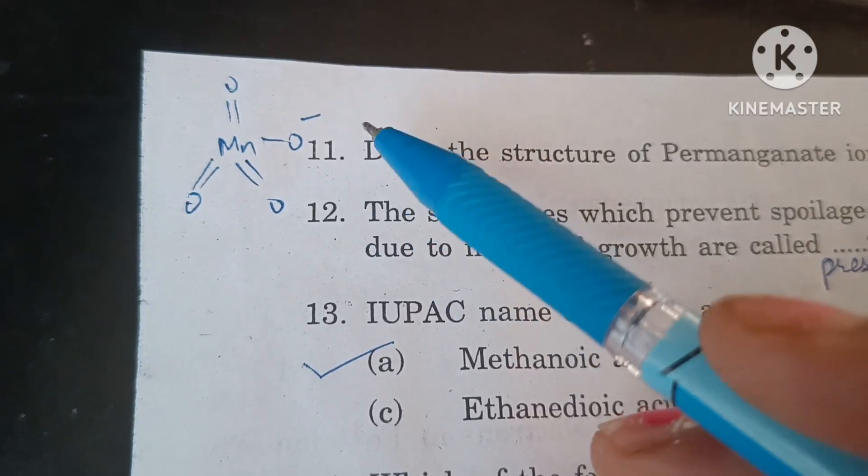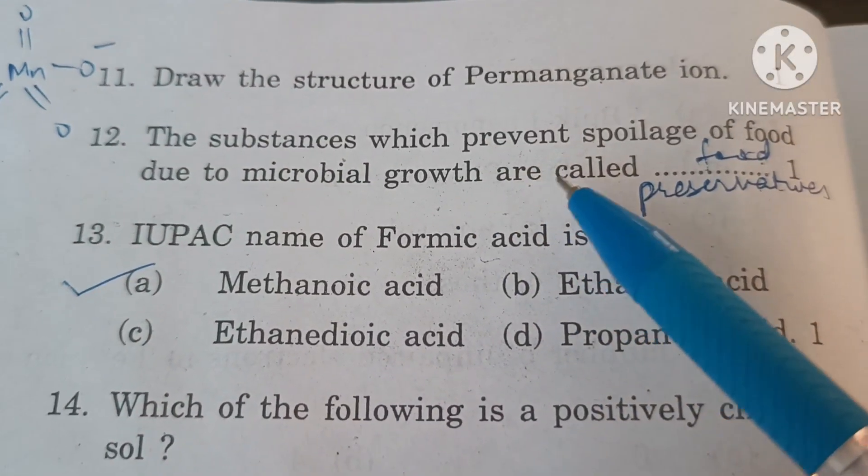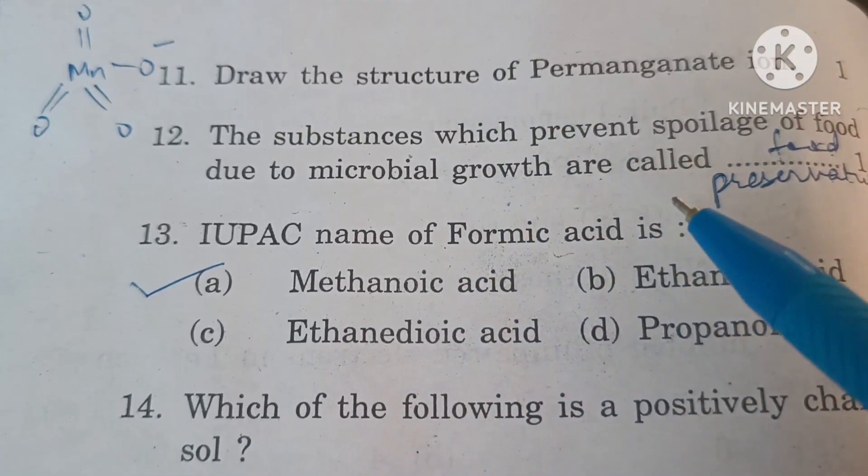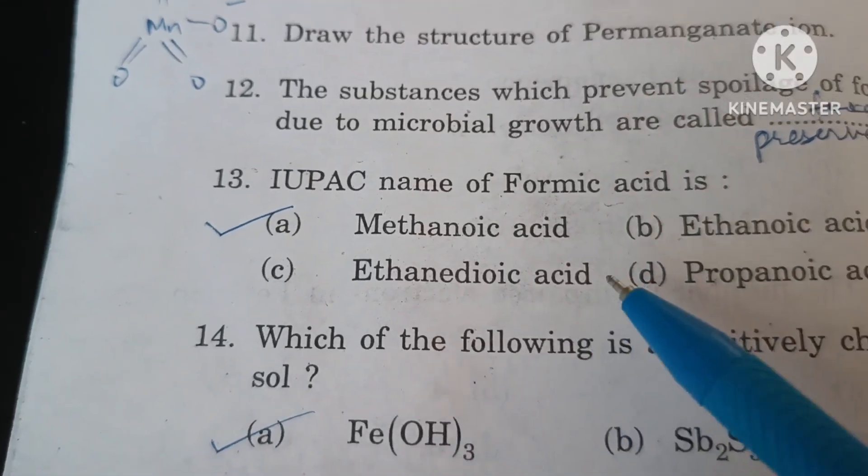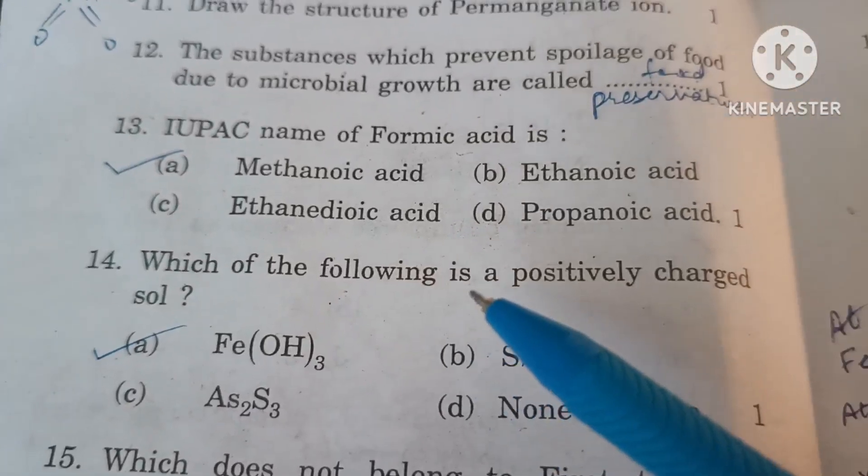Draw the structure of permanganate ion. Manganese is doubly bonded to three oxygen atoms and singly bonded to one oxygen atom with a negative charge. The substances which prevent spoilage of food due to microbial growth are called food preservatives.